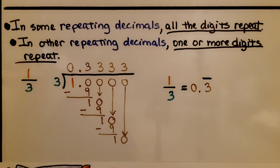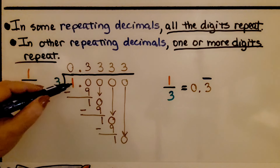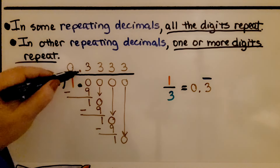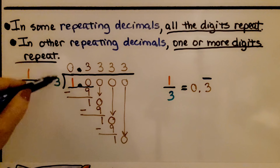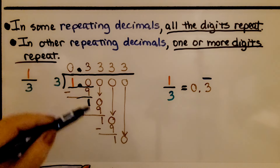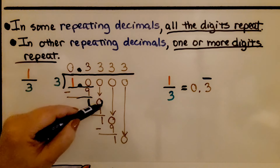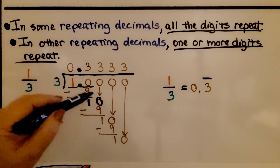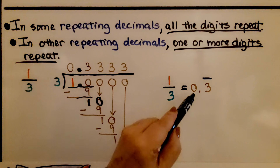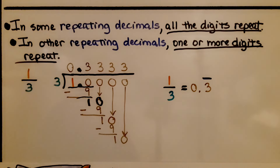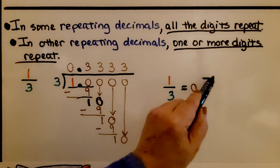In some repeating decimals, all the digits repeat; in others, one or more digits repeat. For 1 third, 3 can't fit into 1, so we put a 0, add a decimal point and some 0s. 3 fits into 10 three times — 3 times 3 is 9, subtract and get 1, add another 0. We continue to get 3s in our quotient, so we have a repeating 3. We write 0.3 with a bar over the 3 to show it's repeating — 1 third equals 0.3 repeating.